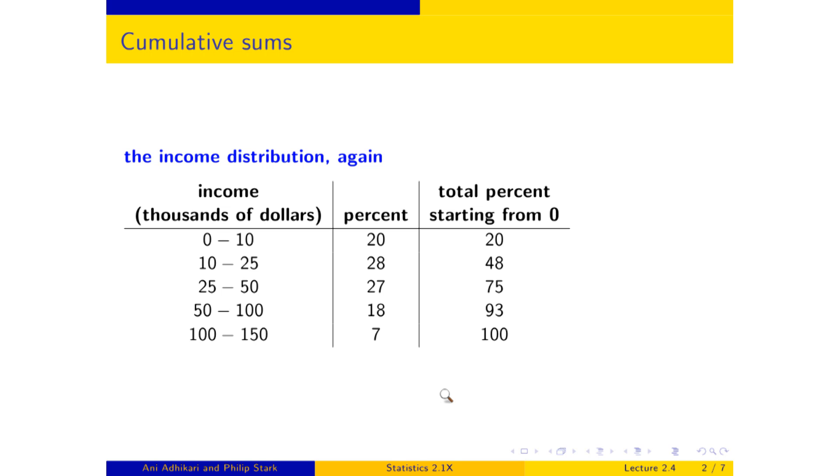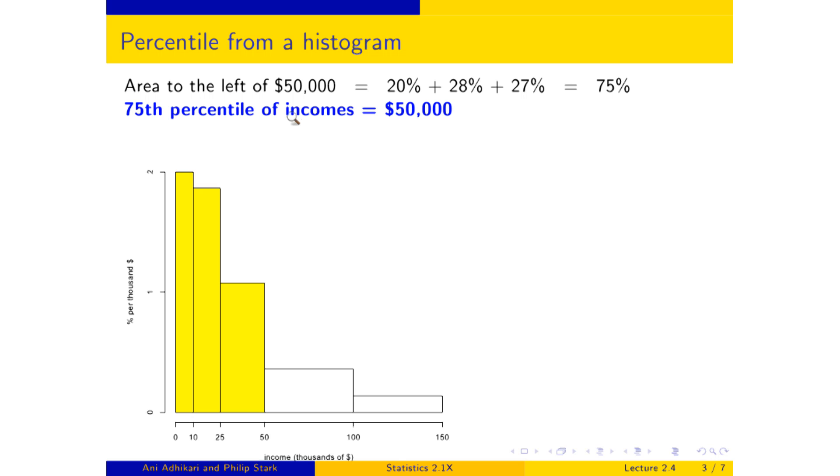And you can see from this table that the percent of people who had incomes in the zero to $50,000 range was 75%. In other words, the 75th percentile of these incomes was $50,000. And that's a lot easier to see in a picture. If I look at the area to the left of $50,000, there's your $50,000, and you're looking to the left, then that's your 20%, that's 28% here, and 27%, and the yellow bars add up to 75%. And therefore, 75% of the incomes were below $50,000, which means that $50,000 is the 75th percentile of the incomes.